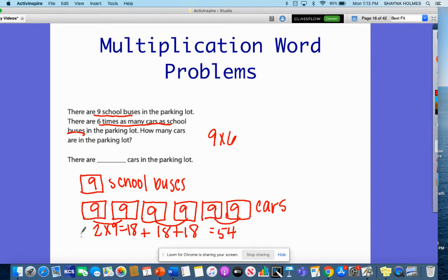Now, if that's a lot of adding for you, think about some facts that you might already know. Well, I know that five times nine is 45. I know my five facts. So since I know those, I can come over here and say 45 plus one more set of nine. And that is going to give me 54. So I know that nine times six is 54. So there are 54 cars in the parking lot.